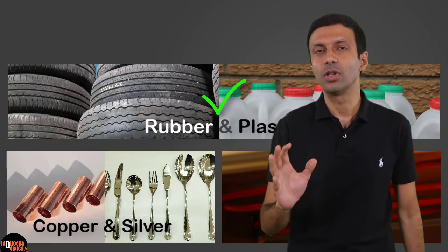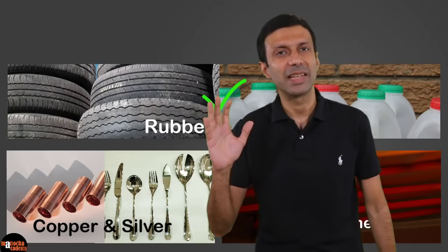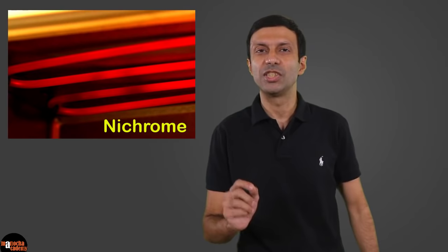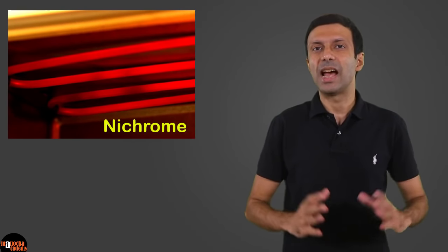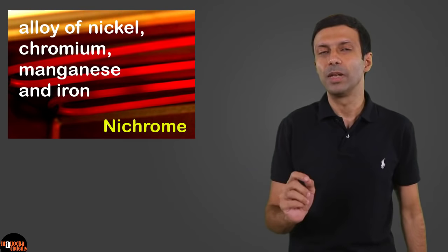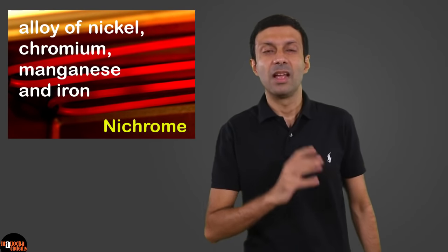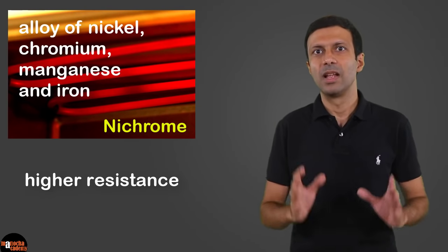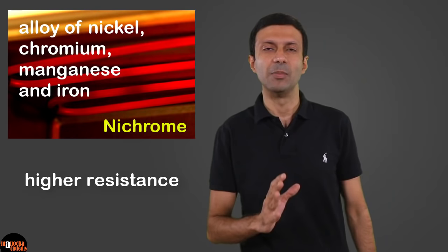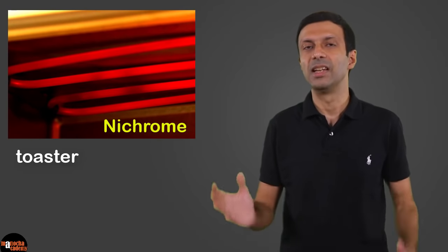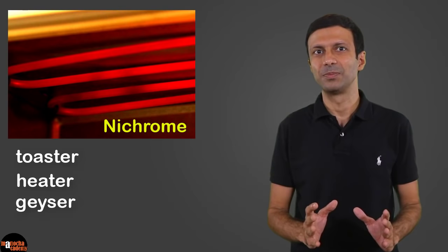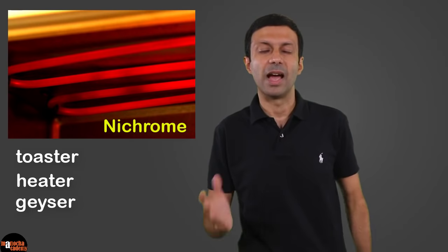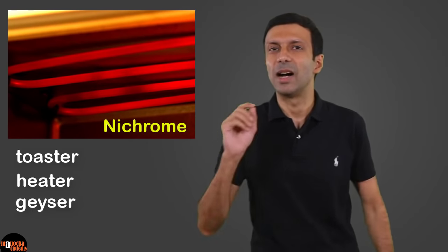Insulators don't allow current to pass through them easily. And we are left with nichrome, which is a resistor. Nichrome is an alloy of nickel, chromium, manganese and iron. Nichrome has a higher resistance compared to conductors, and it is used to make heating elements of appliances such as toasters, heaters, and geysers. Due to its high resistance, the nichrome coil gets heated up and provides the heat energy needed for these appliances.